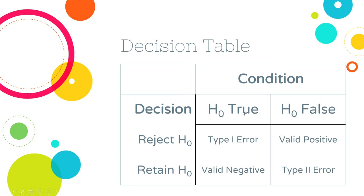In the world where they're sober, I can reject the null — which would be a type one error — or I can retain the null, which would be a valid negative. Those are my two options in the world where the null is true. In the world where the null is false, there are two possibilities: I can reject the null when it's false, which is a valid positive, or I can retain the null when it's false, which is a type two error. And the thing is, you don't know which world you're in — that's why you have to do a test.